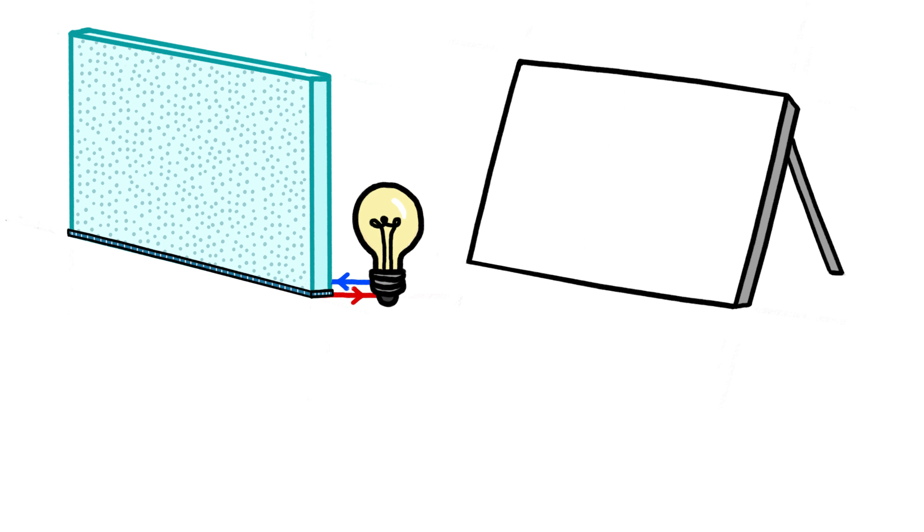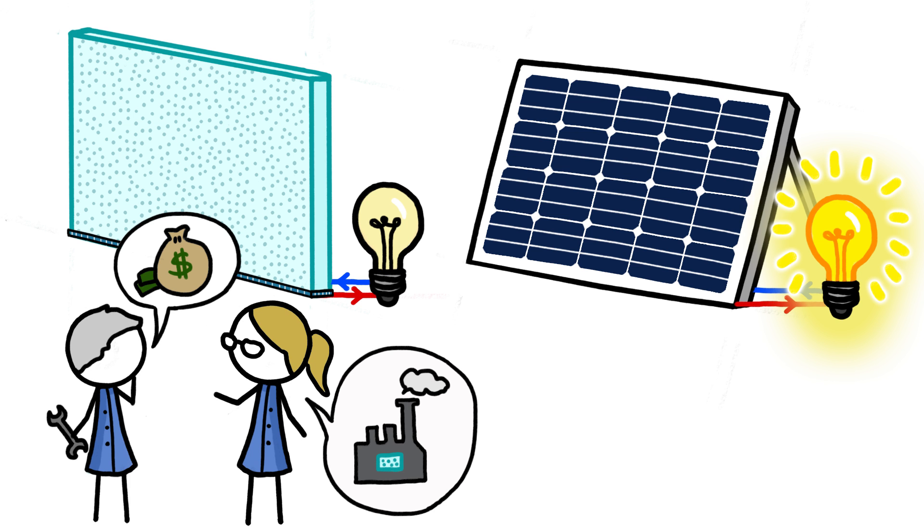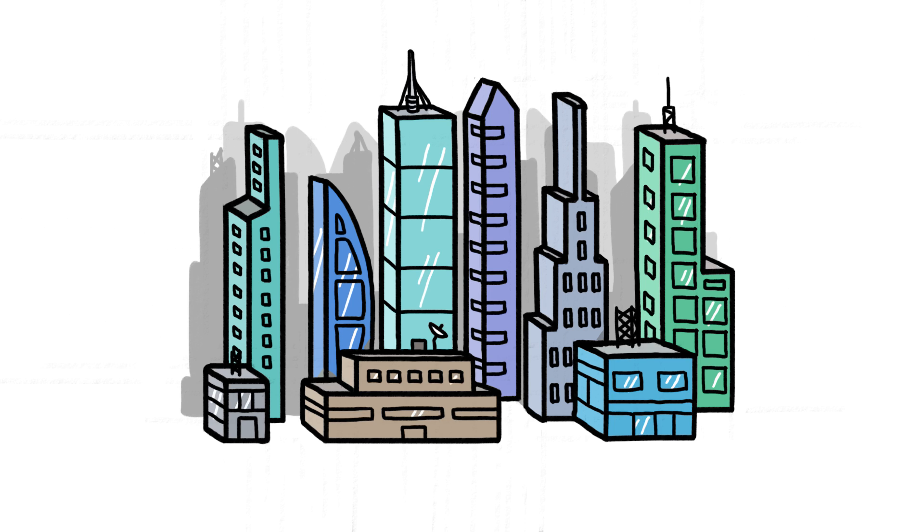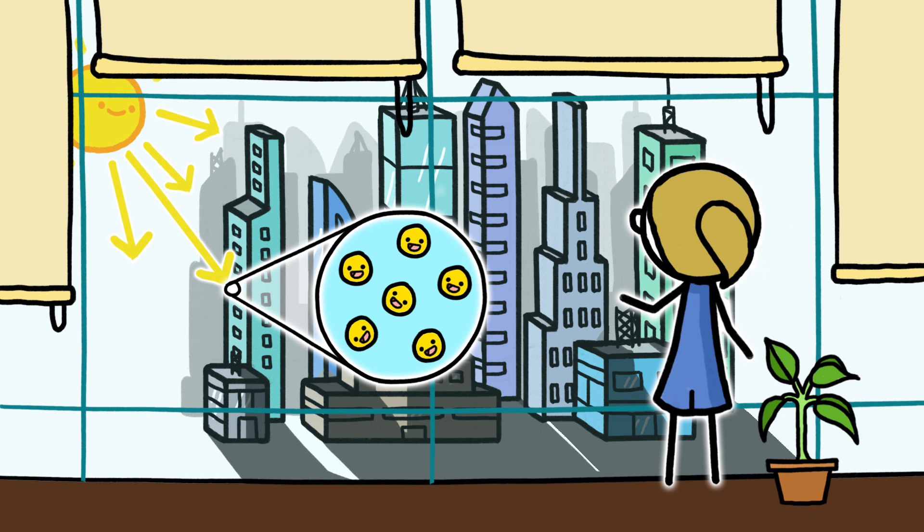But solar windows aren't yet as efficient as typical solar panels, and engineers are still working out some of the technical kinks. So optimistic estimates put transparent quantum dot solar windows at least several years out. And whenever they do roll out, you might not even notice, because you'll be looking right through them.